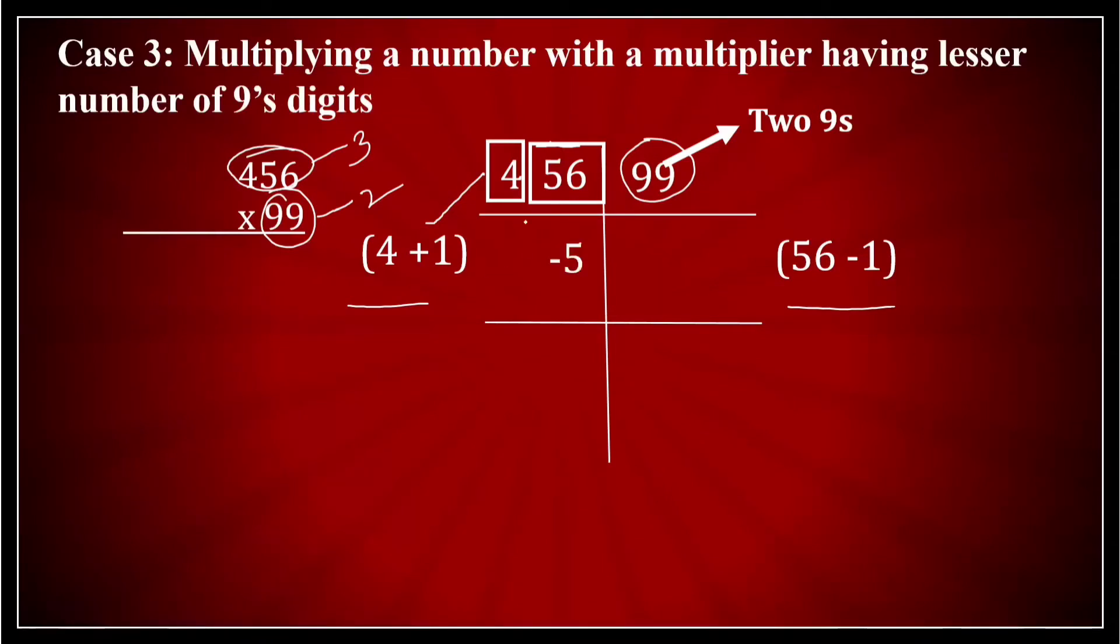Now whatever I have got 4 plus 1 has come out to be equal to 5 and I write here. And 56 minus 1 I get what? 55 that I write over here. Or if you think of 456 minus 5 is 451. 99 minus 55. 9 minus 5 is 4. 9 minus 5 is 4. So 454 I get here. And this is the answer that I have got. 456 multiplied by 99 is 45144. And that is my answer.